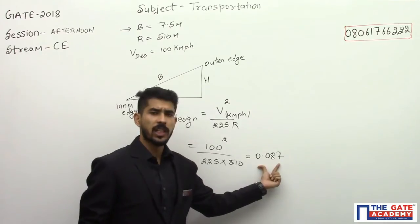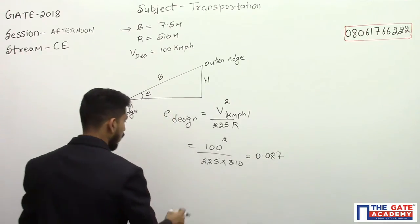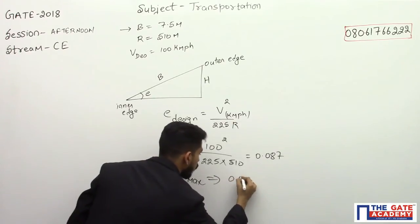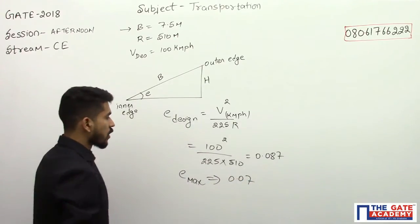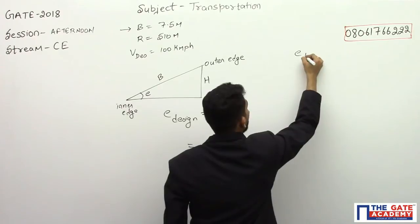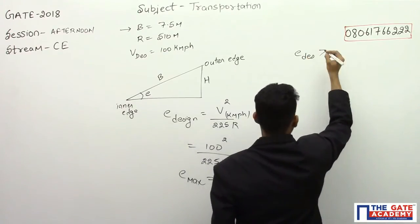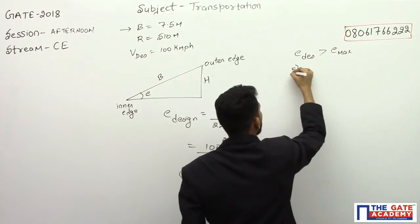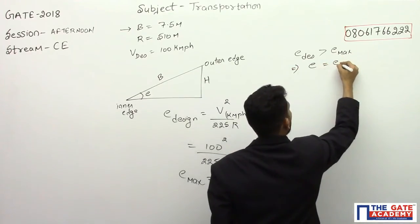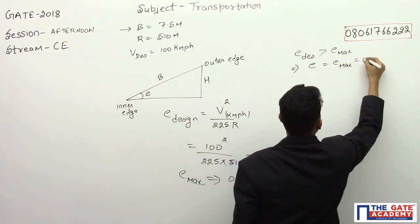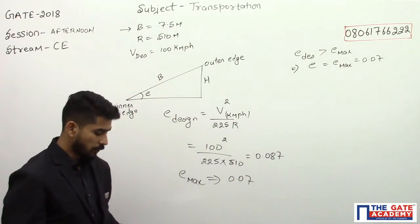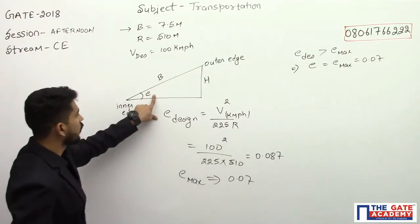e_design equal to 0.087. But the maximum super elevation which we can provide is equal to 0.07. Since our e_design is greater than e_maximum, that means e will be equal to e_max equal to 0.07. We will provide a maximum super elevation of 0.07.